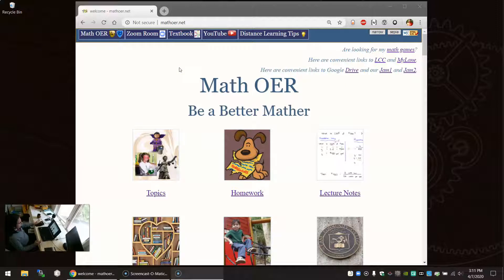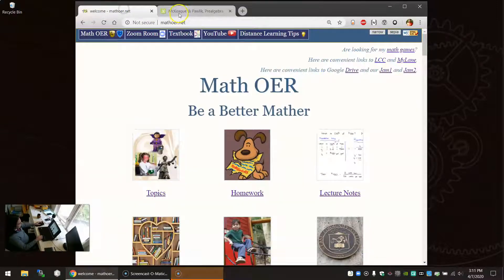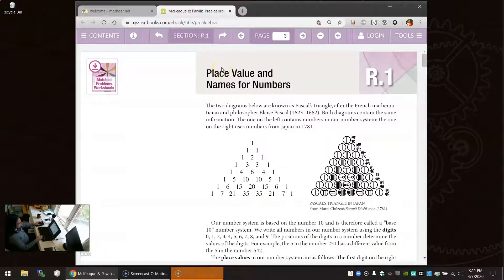So we're looking at our website. Up at the top is the link for the textbook, and if I hold Ctrl for Windows or Command for Mac, that will open that in a new tab. So now I can go back and forth with my tabs and look at the website and the textbook.